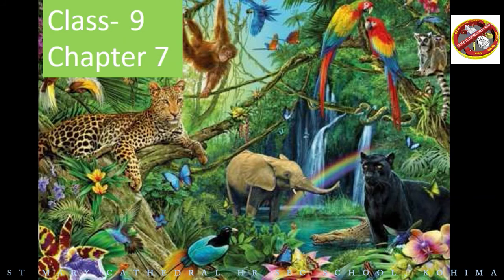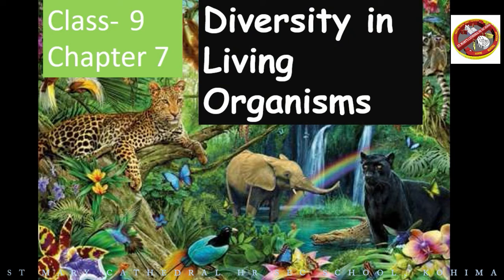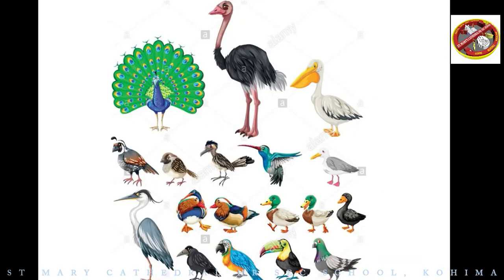Class 9, Chapter 7 — the topic we are going to study is diversity in living organisms. Diversity means a range of different things, so we are going to learn about a range of different living organisms. Looking at examples of different types of birds, they are different in their structure. Some are small and some are big, which also shows the diversity of birds.